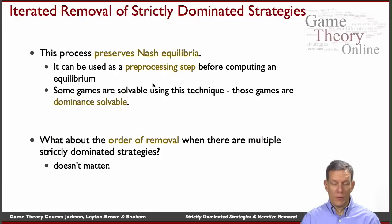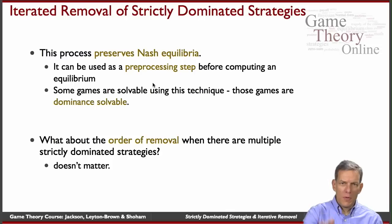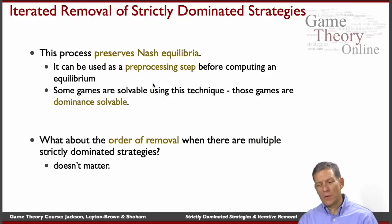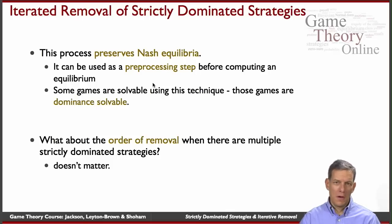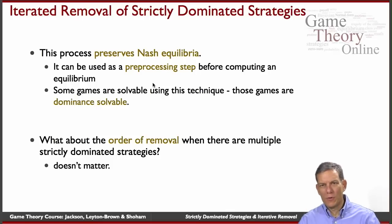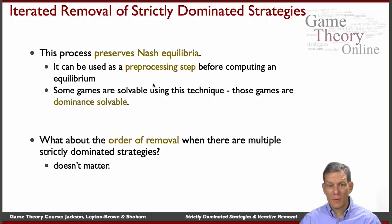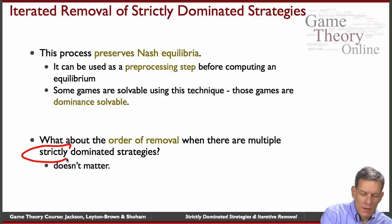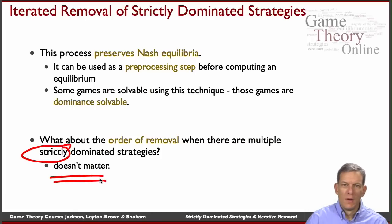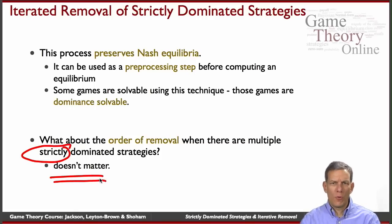What about the order of removal? We did things in a very particular order — noticing that the column player's right play was strictly dominated, and so forth. What if we started with a different player? Would it make a difference? If we're dealing with strictly dominated strategies, then order doesn't matter. No matter how you do this, whatever order you do it in, you'll end up with the same solution.